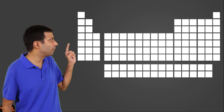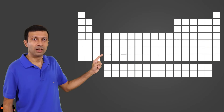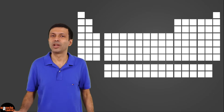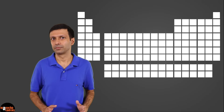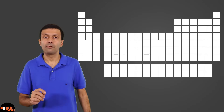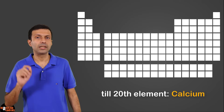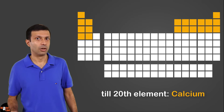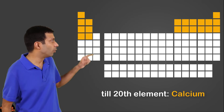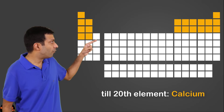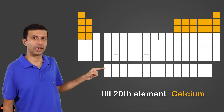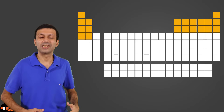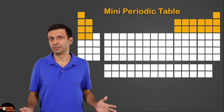As I said, we will start with a blank table and fill it up as we go along in this video. Since our focus is only till the 20th element, which is calcium, we will be looking only at the first four rows of the periodic table. Let's call this our mini periodic table.